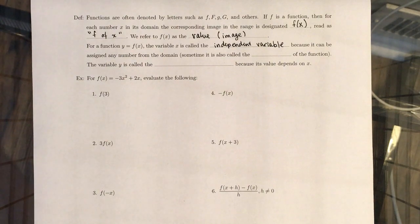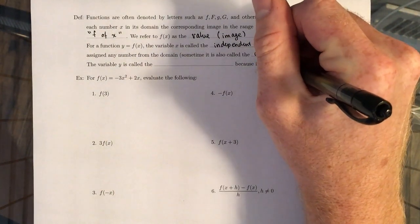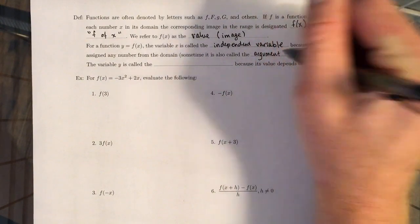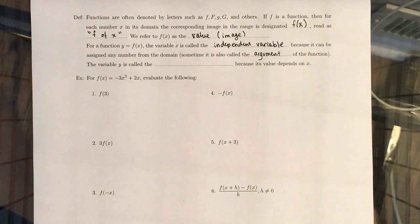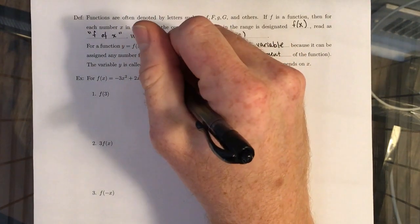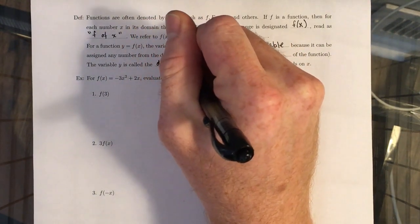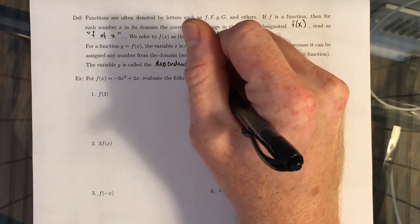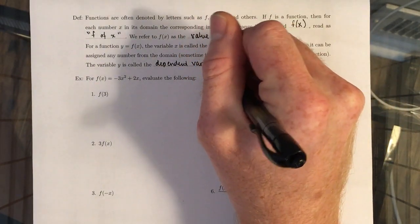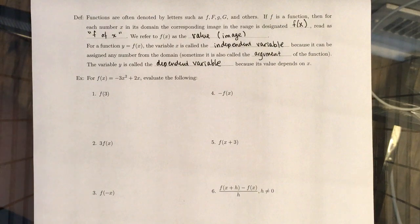Sometimes it's also called the argument of the function and the variable Y is called the dependent variable because its value depends on which X value you're using.